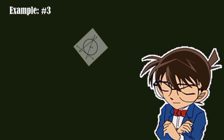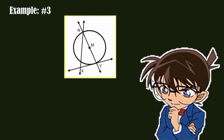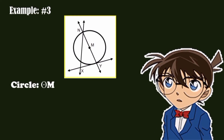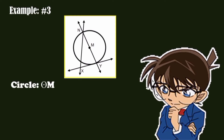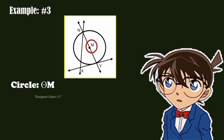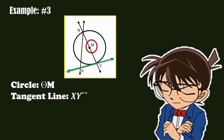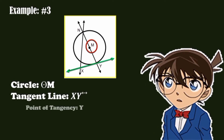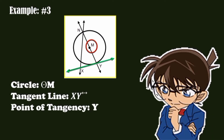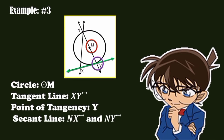Example number three. Look at the illustration. This is Circle M. Our tangent line is line XY. And the point of tangency is point Y. Our secant lines are line NX and line NY.